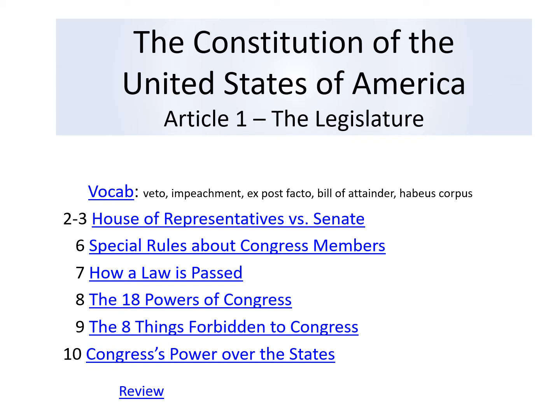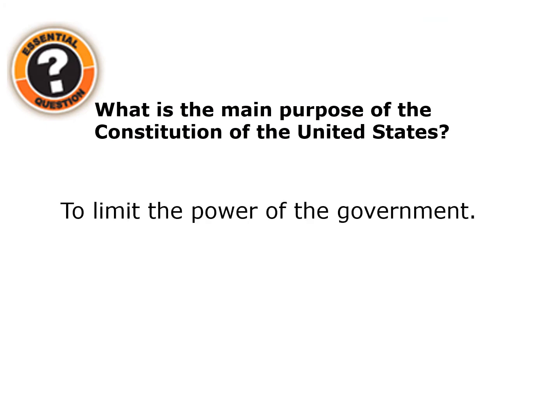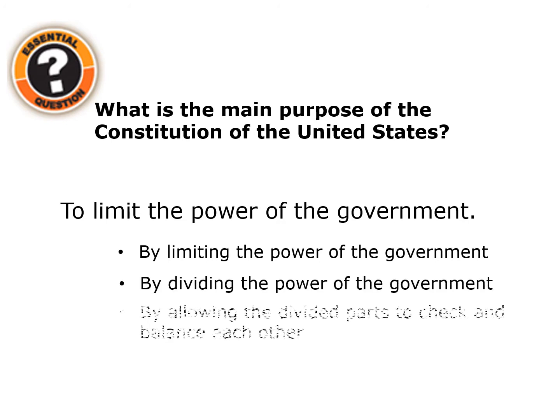Here's the overview. What is the main purpose of the Constitution of the United States? It is to limit the power of the government — by limiting it directly, by dividing the power of the government, and by allowing each of the divided parts to check and balance each other.